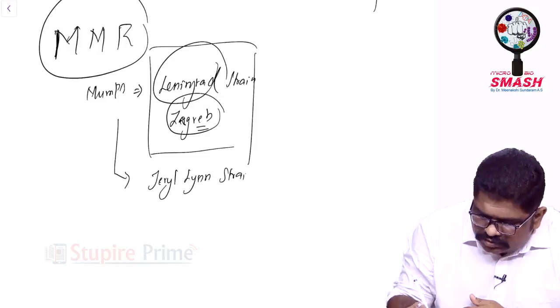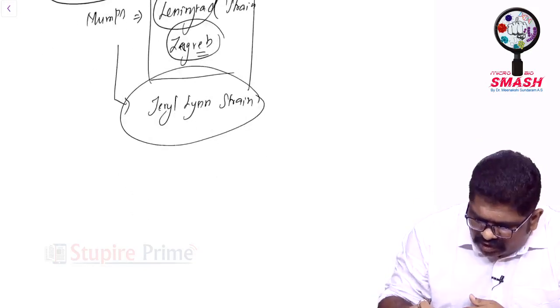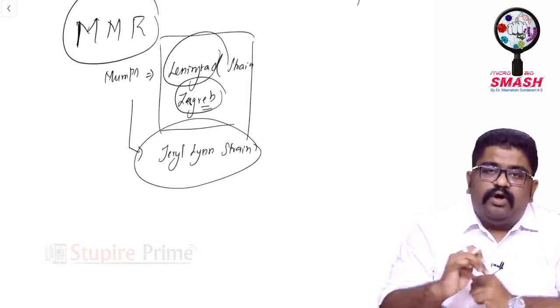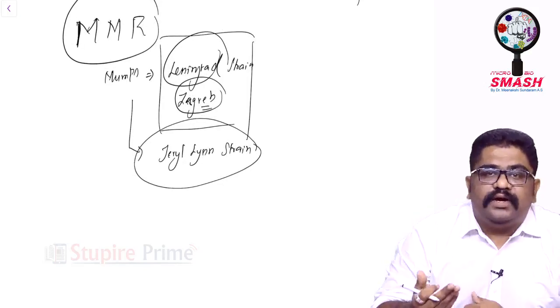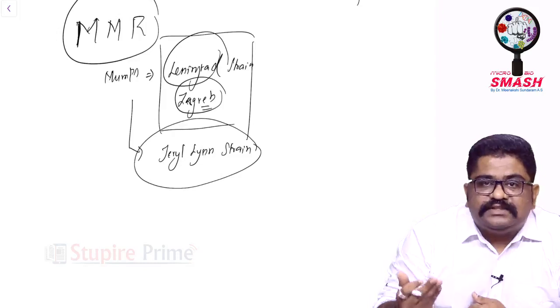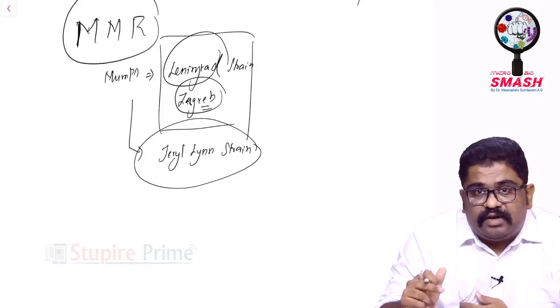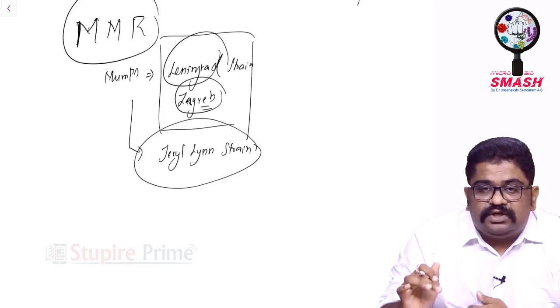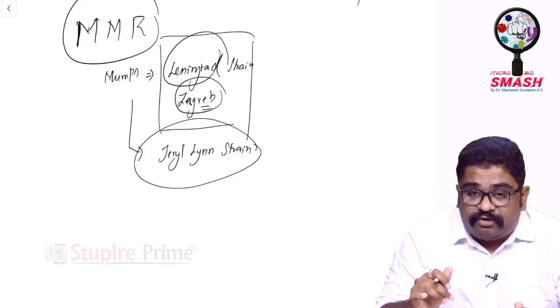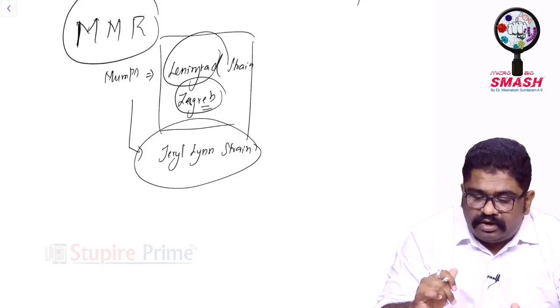The very commonly used strain is Jeryl Lynn strain. Remember, those people who are showing any kind of hypersensitivity to egg albumin or egg proteins are not supposed to be given this. I've already told you MIRY: mumps, influenza, rubella, yellow fever, and rabies can be contraindicated when a person has egg allergy or egg hypersensitivity.